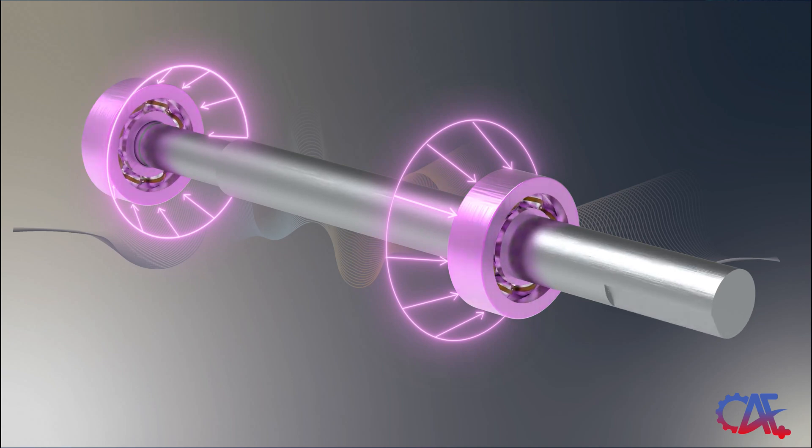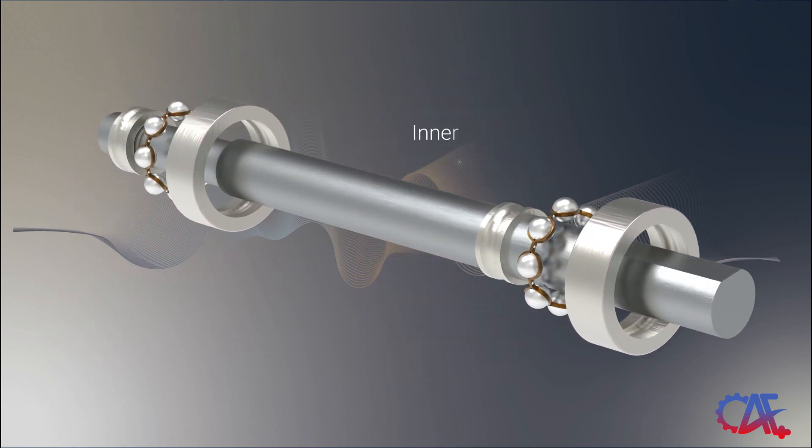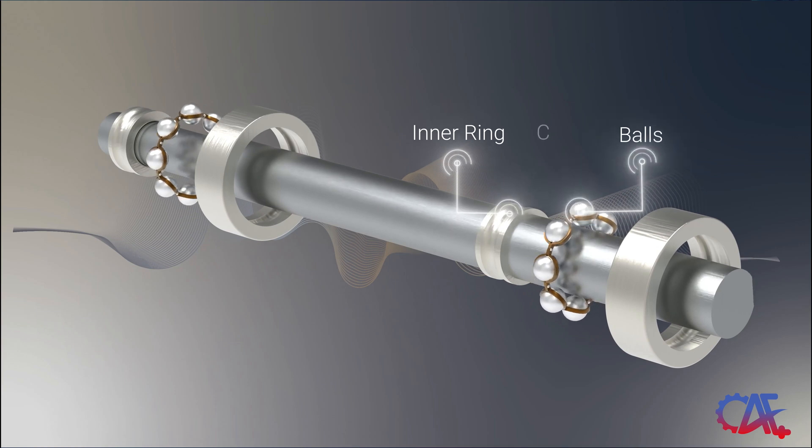As previously mentioned, the fundamental components of deep groove ball bearings comprise an inner ring, hardened steel balls, cage assembly, and an outer ring.